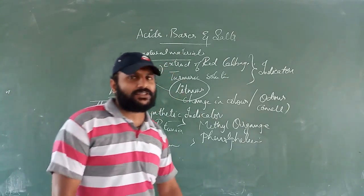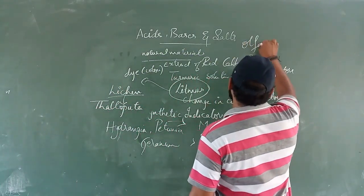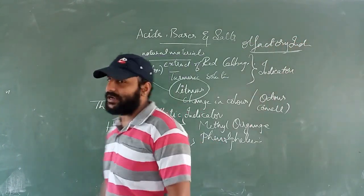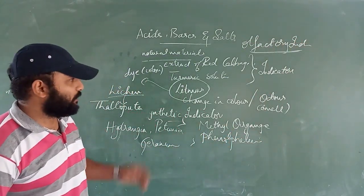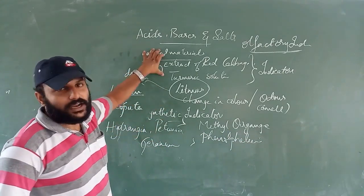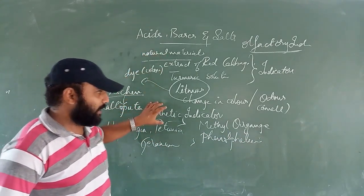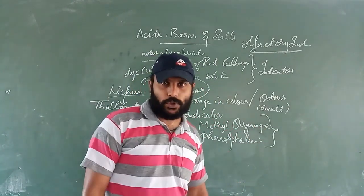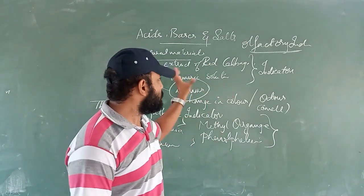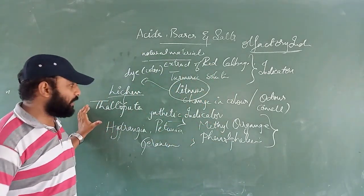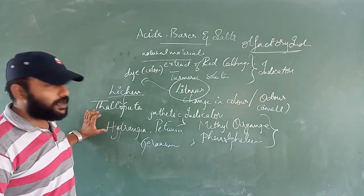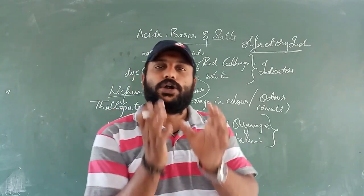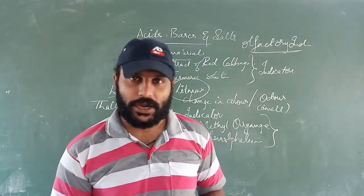So the three types of indicators are: natural indicators, synthetic indicators — such as methyl orange and phenolphthalein — and olfactory indicators. Examples of plants used as natural indicators include hydrangea, petunia, and geranium, which are used to test the nature of a material.